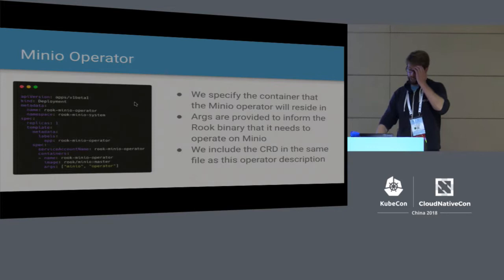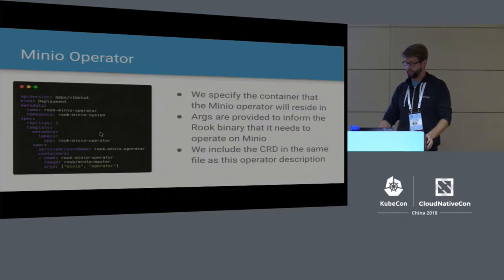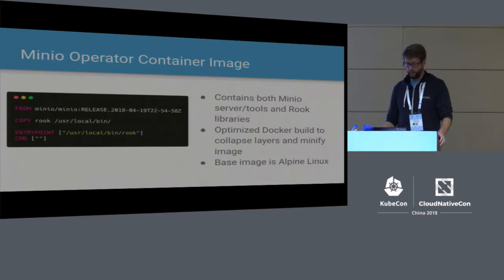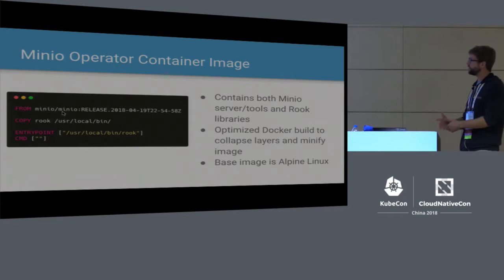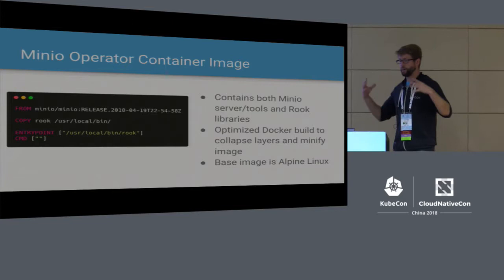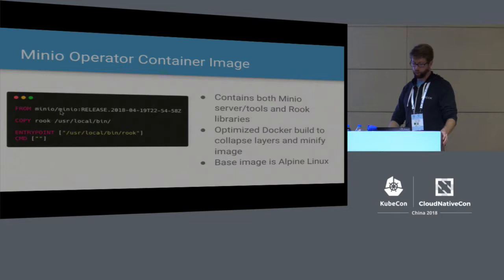Minio has an operator just like Ceph — basically a deployment saying to run the Minio image inside a deployment and run the operator. Once that's up and running, it'll be listening and waiting for object stores to be requested and created. That image is based on upstream Minio. Rook is not in the business of rewriting the data path or writing storage solutions ourselves — we take existing storage solutions and build all the orchestration and automation on top to make them run well and easily inside Kubernetes. We take upstream Minio, add the Rook binary into it, and that's it.